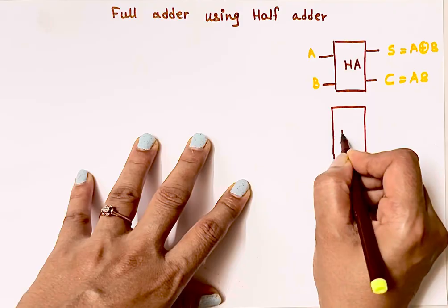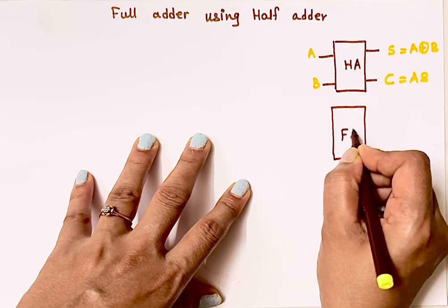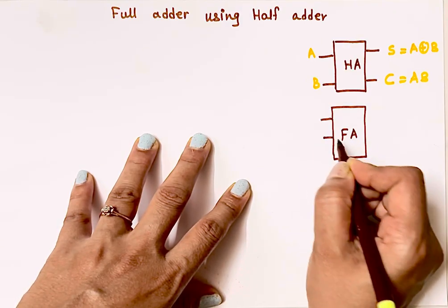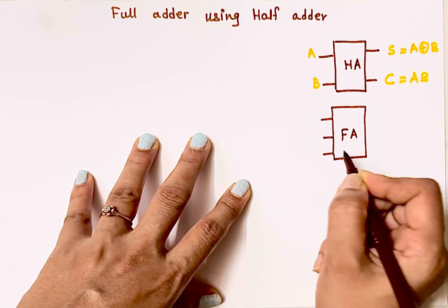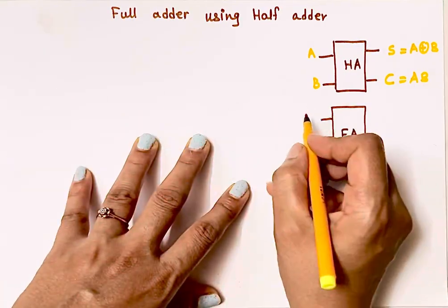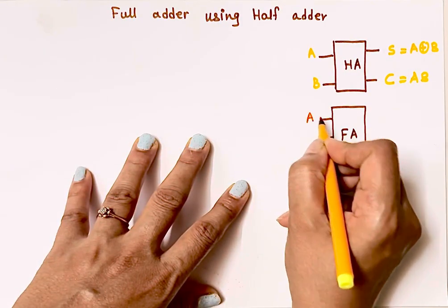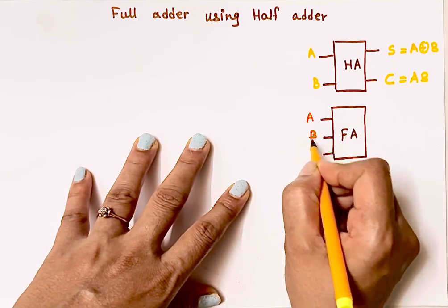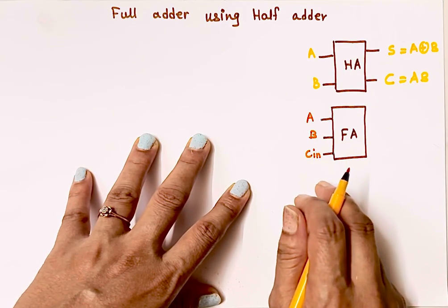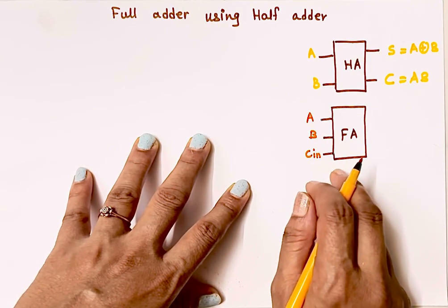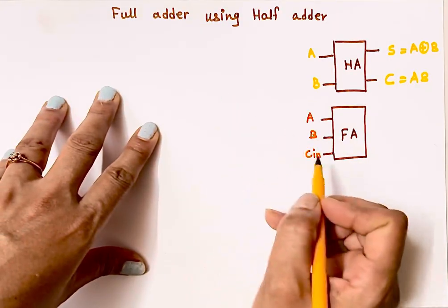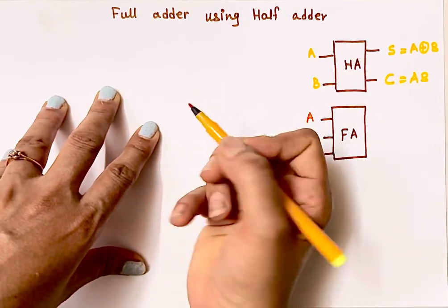A full adder has three inputs. This is my full adder circuit — inputs are A, B, and carry input C-in. C-in is the additional input present in the full adder. Let's see why we use this additional input.